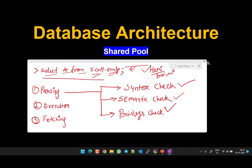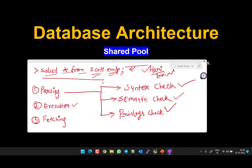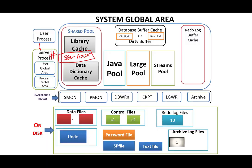If the user has the correct permissions, they will be verified by the privileges check. If everything is fine, it goes to the execution plan, where the query is executed. Then the fetching process starts: the server process takes that data block from the data files into the database buffer cache, and from the database buffer cache it returns the result to the user process.